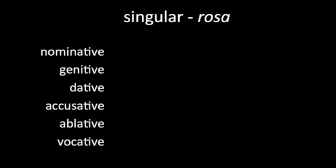These cases are best learnt within a paradigm, so we're going to use the word 'rosa', which is 'rose', or the flower rose. Its forms are: in the nominative, 'rosa', which means simply 'rose', or 'a rose', or 'the rose'.